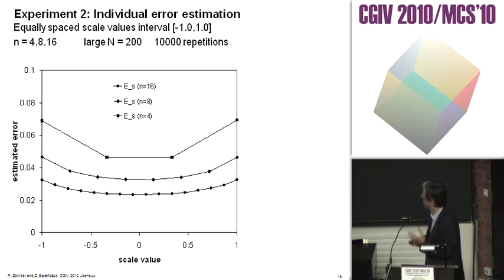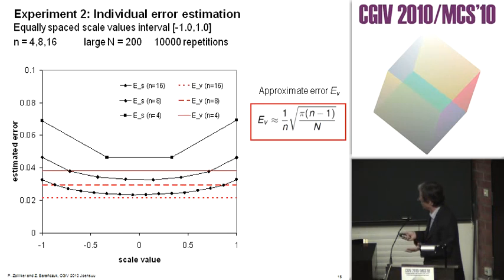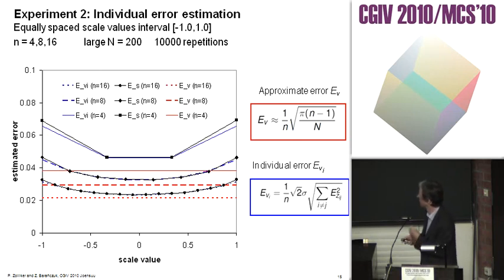We see the simulated data shows that for larger scale values, the individual error rises on both sides. If you use the approximate error, it's constant, so it's always a lower limit of the simulated error. If you use the individual error, it fits quite well. It starts to get small deviations for quite large scale values.